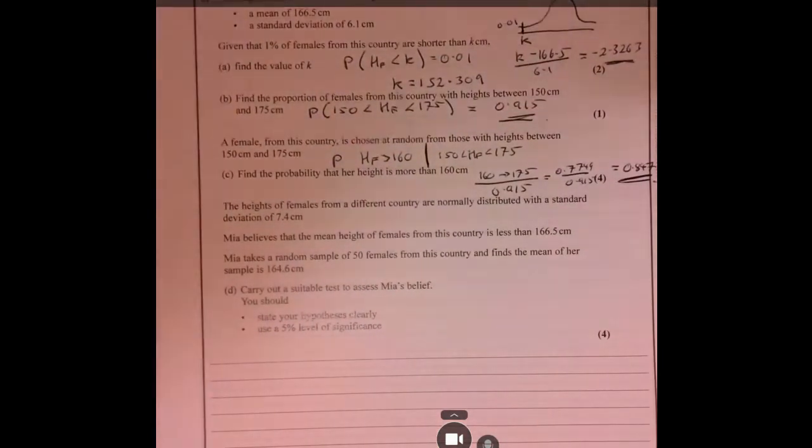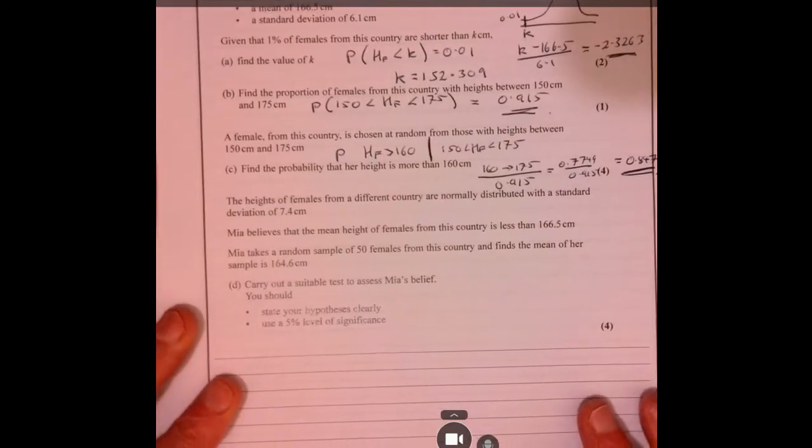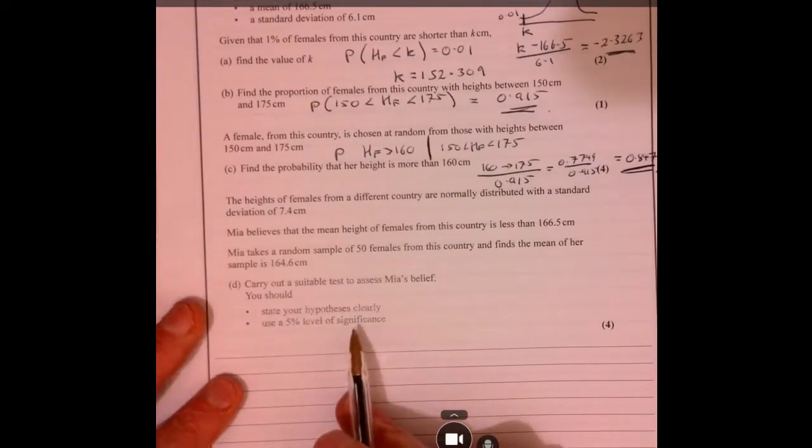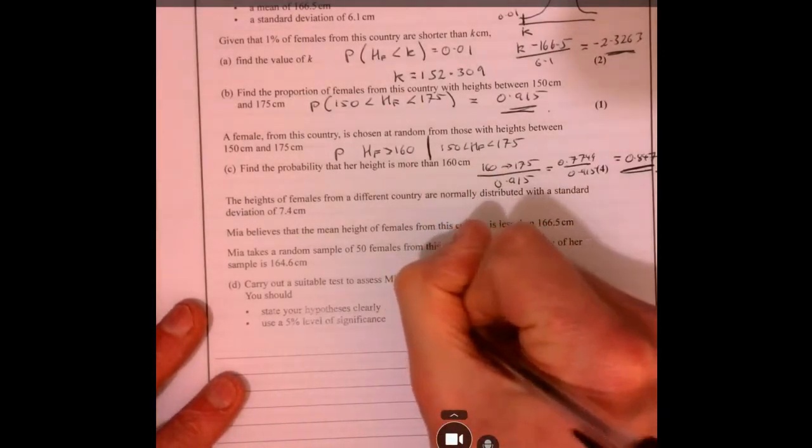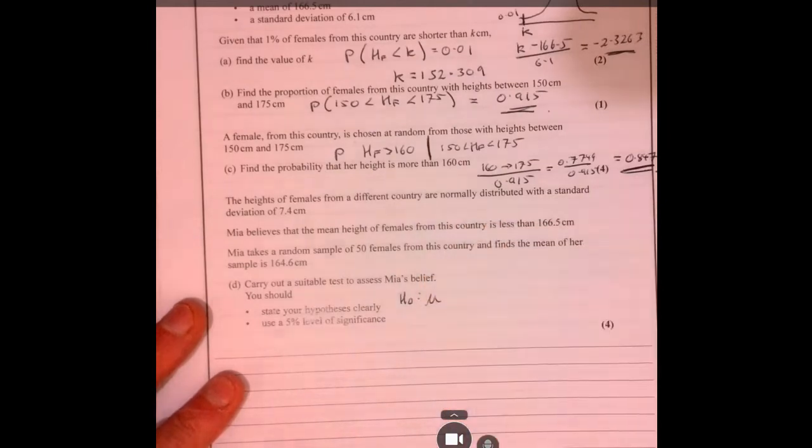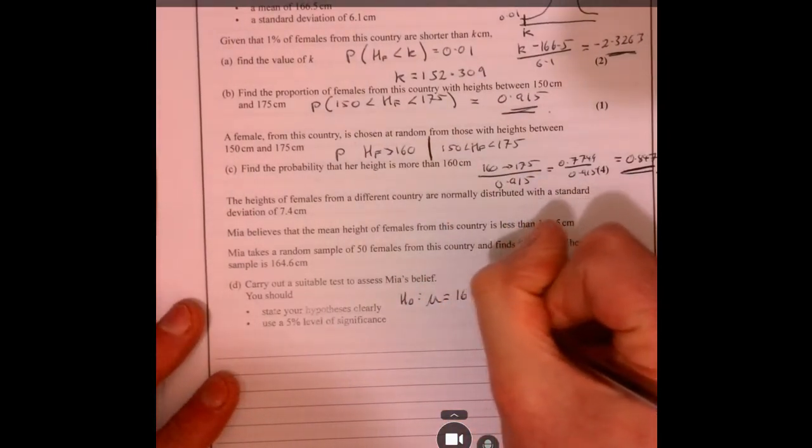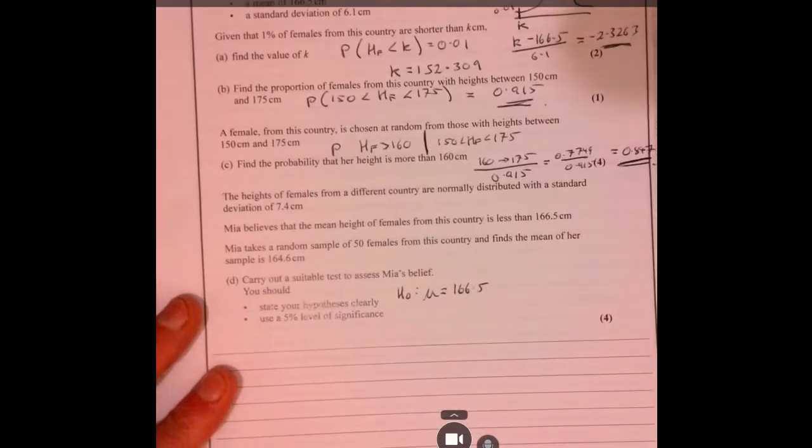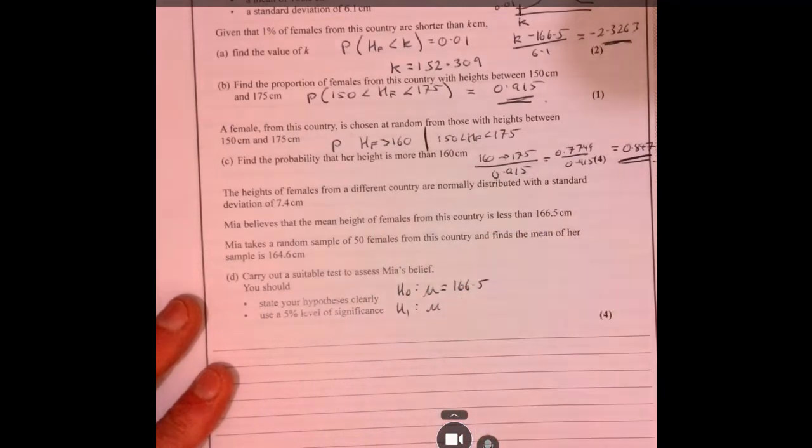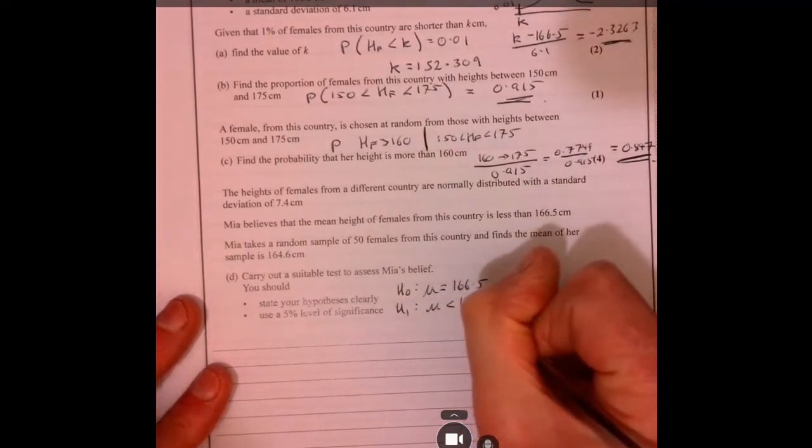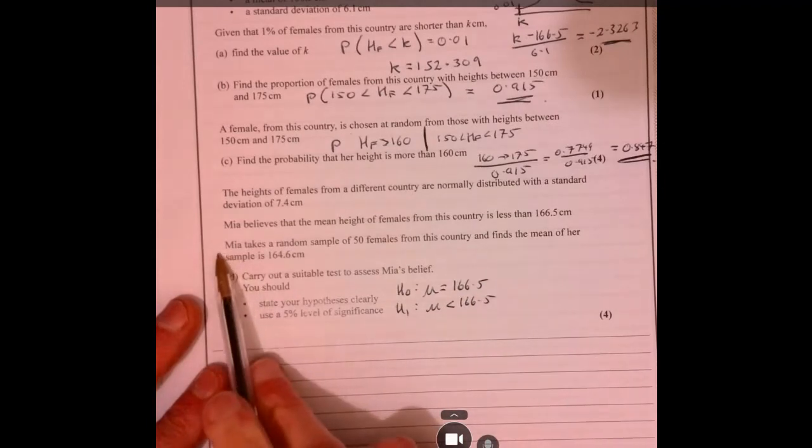On to part D. We need to do a hypothesis test here. Things that we need to write down: the null hypothesis, that's where mu is equal to, the mean is equal to 166.5. And the alternative hypothesis here is that the mean is less than 166.5. That's what Mia's belief is.